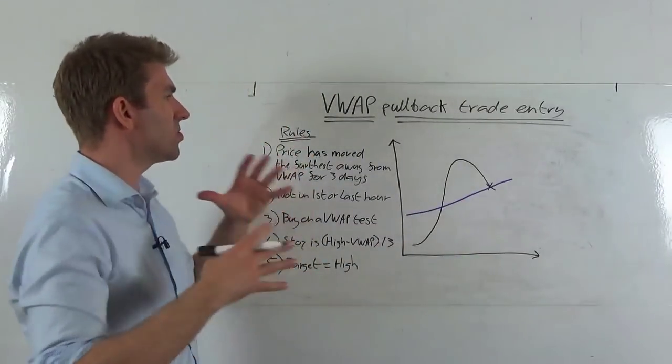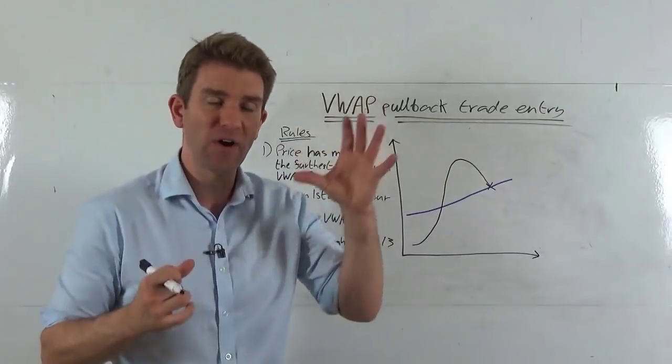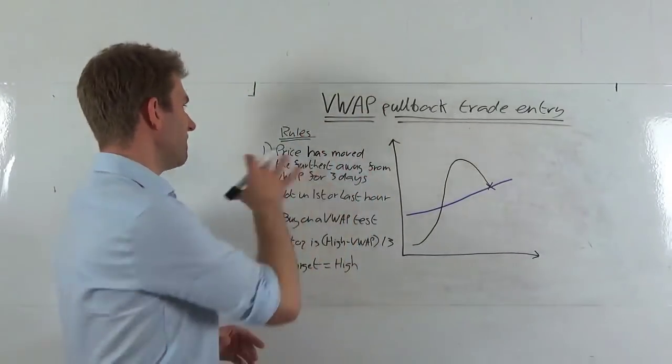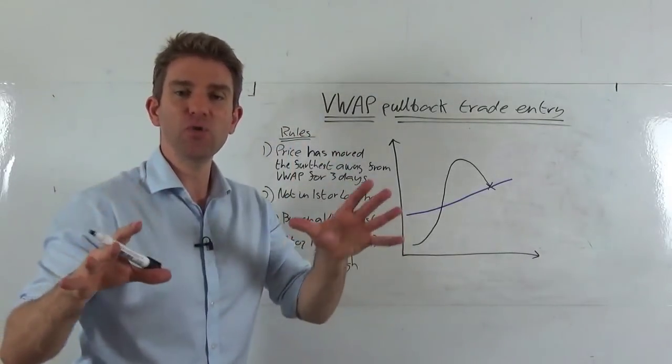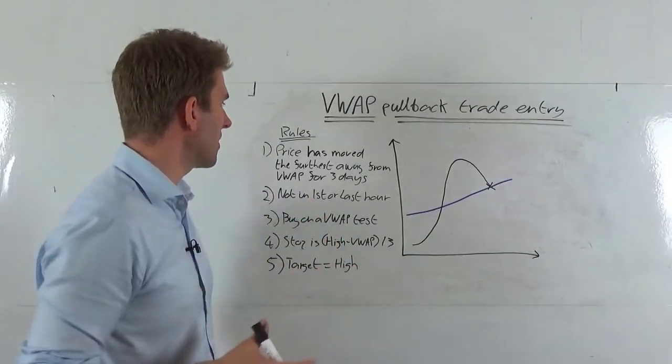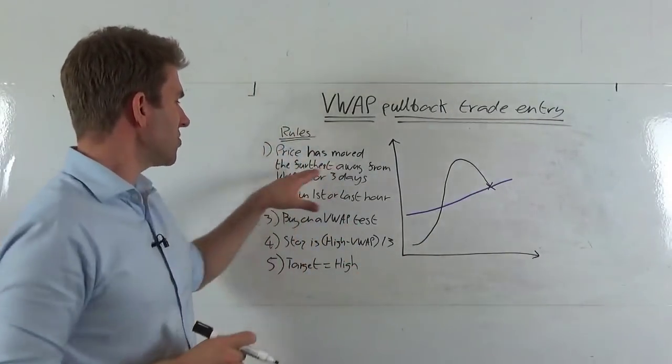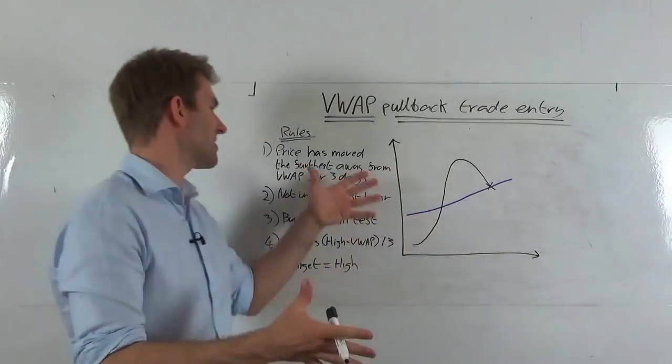And these are the rules of the VWAP pullback trade entry to find stop, to find target, to find rules. The first filter, if you like, and again adjust these to suit. Have a little look at it, tweak it, adjust it for your trading plan if you like this kind of stuff. Rules number one: price moves the furthest away from VWAP for three days.